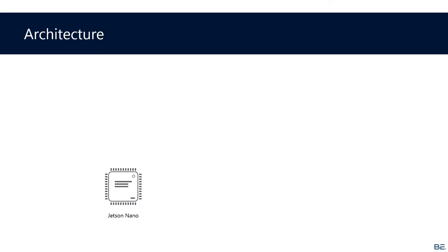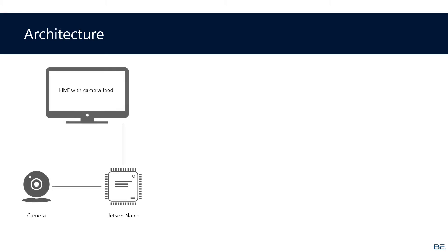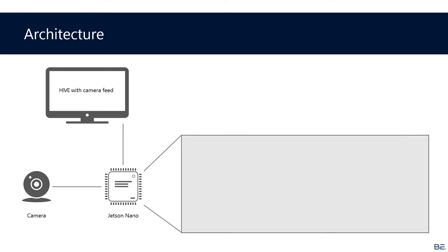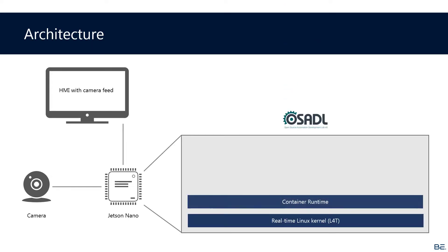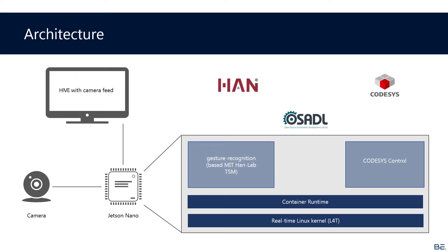Let's take a look at the system architecture. We have a Jetson Nano with a connected camera and display. On the Jetson Nano itself we run a real-time Linux kernel and Docker container runtime. We create two Docker containers — one for the CODESYS runtime system and one container for gesture recognition based on the MIT HandLab TSM model. We use OPC UA to communicate between the two containers, as it is a standard interface for PLC applications requiring no adaptation on the CODESYS control side. This way we can transmit any data between an IEC application written using classical programming languages like structured text or ladder logic, and any machine learning application written in Python, for example.